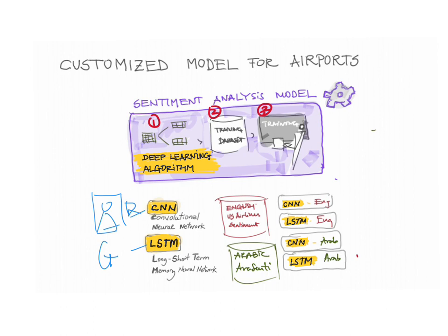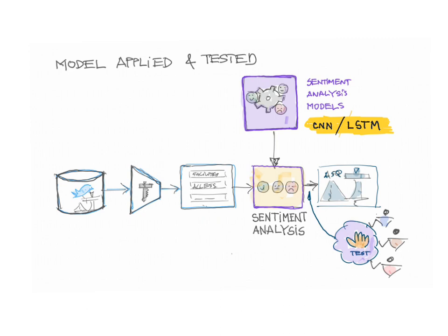To train the model, we use two data sets, one in English and one in Arabic. Then each of the two algorithms are trained with each of the data sets, and now our model is ready to carry out the sentiment analysis of the four airports used in this research. To assess accuracy, we carried out a manual test taking a relevant sample. Three evaluators agreed on the sentiment of each of those tweets, and those were compared to the evaluation of our model, so we were able to measure the performance or accuracy.